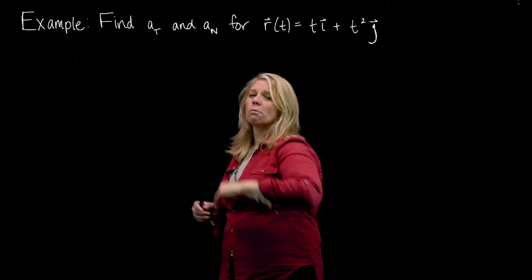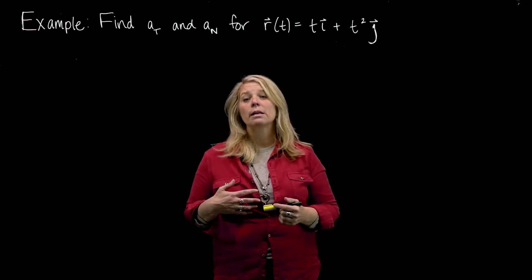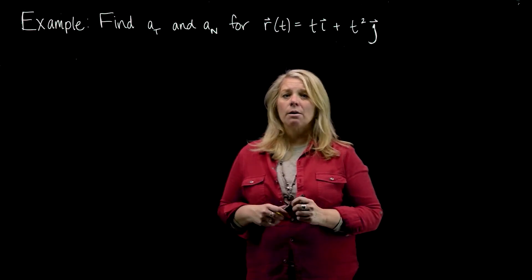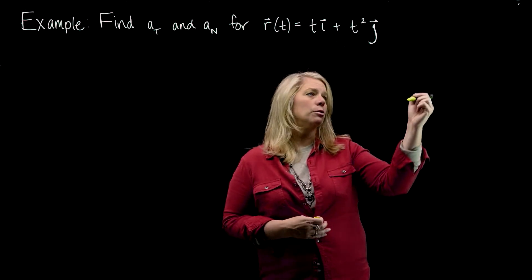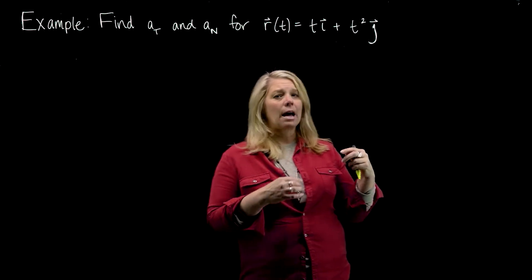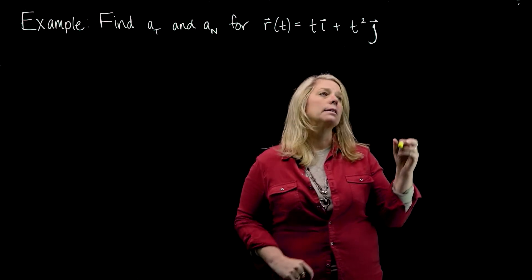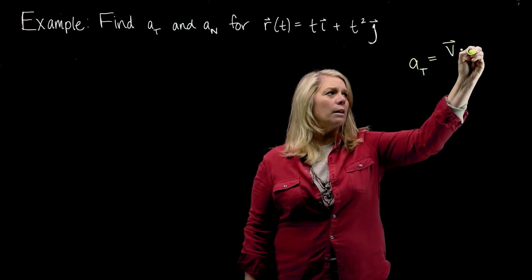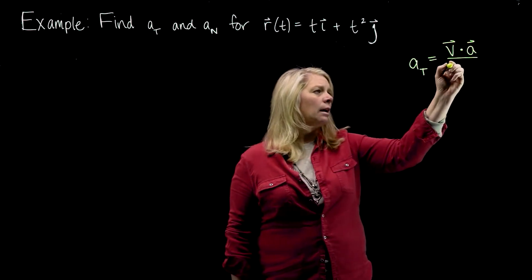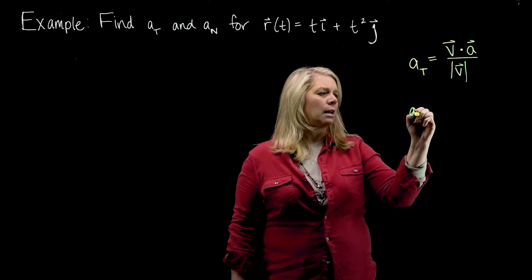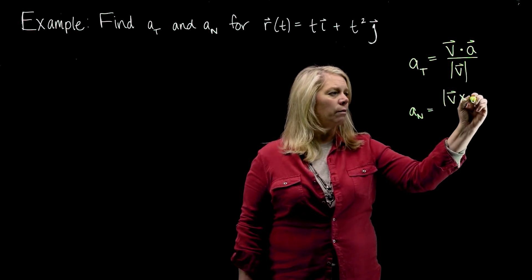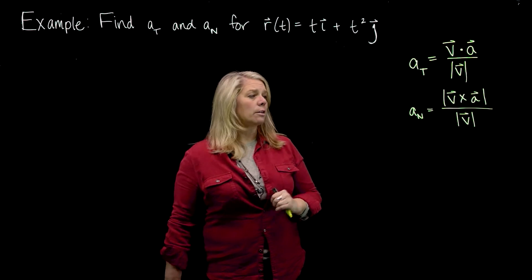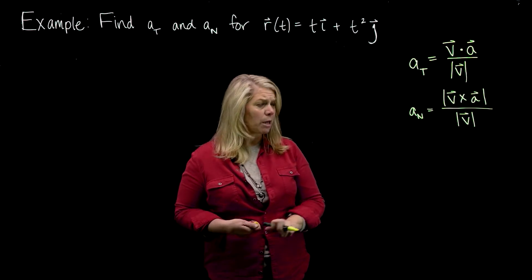If we're going to calculate the tangential and normal components of acceleration, we first have to choose some formulas. There are many possible formulas you might choose — you just have to pick one that works well for you. I'm going to use the ones that use the acceleration and velocity vector and some dot products and cross products. Those formulas allow me to reuse some calculations. Our textbook uses these a lot too, if you look at the examples in the text.